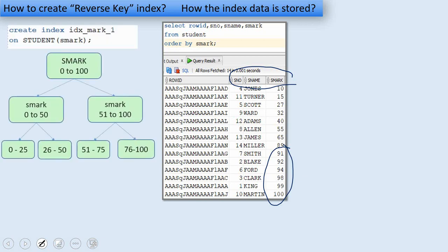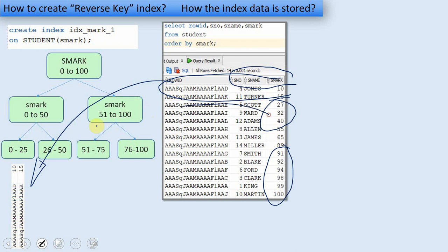Now if we try to create a B-tree on this mark column, it basically creates a tree structure and stores all this information in a sorted way. For example, within this 0 to 25, this particular information will be stored. Same way from 26 to 50, this information will be stored.